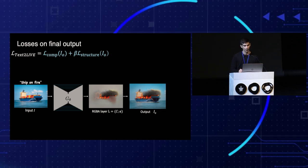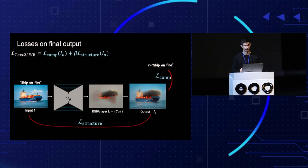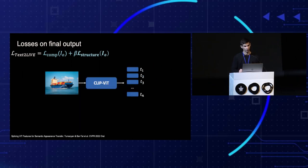Specifically, our driving loss is the composition loss, which encourages similarity between the target text and the composited image in CLIP embedding space. In addition, we apply a structural preservation loss. Our structural loss is defined as a self-similarity loss in CLIP feature space. CLIP is based on the ViT architecture, which processes tokens corresponding to patches in the original image.